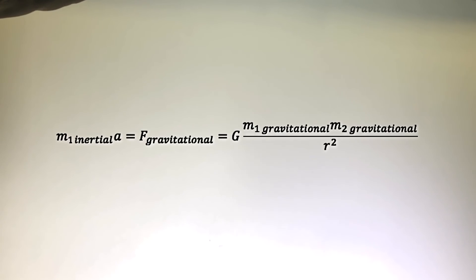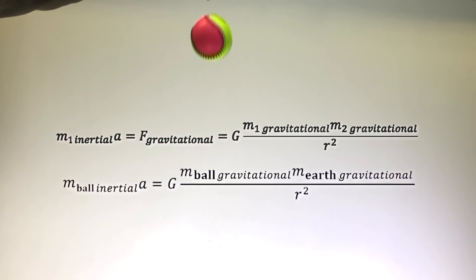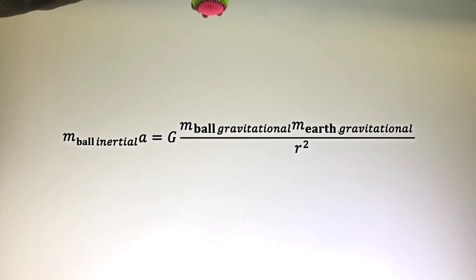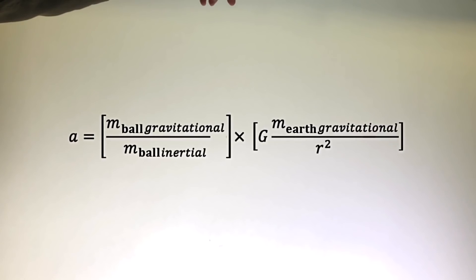So writing that out carefully, we see that M inertial of the ball times the ball's acceleration equals G times the gravitational mass of the ball times the Earth's gravitational mass divided by the distance squared the ball is from the center of the Earth. And if we want to solve for the ball's acceleration, we get this equation here. We see that the ball's acceleration depends on some constants times the ratio of the ball's gravitational to inertial mass.